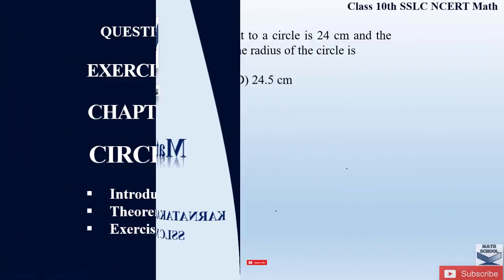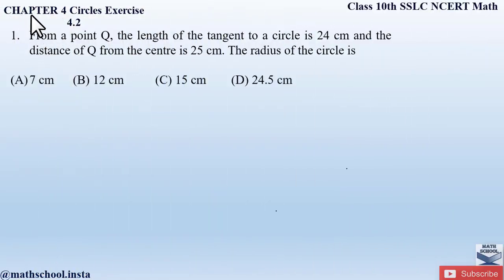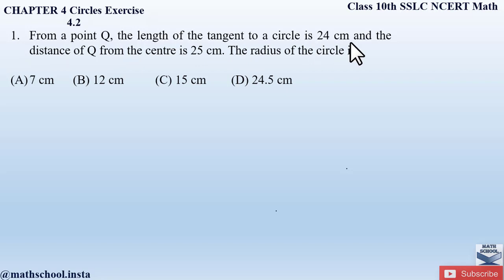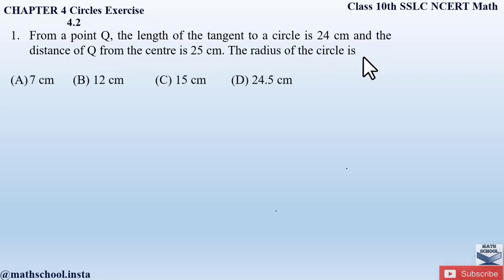Now let us begin. Question number one from exercise 4.2, chapter 4, Circles: From a point Q, the length of the tangent to a circle is 24 centimeters and the distance of Q from the center is 25 centimeters. The radius of the circle is — and we have four options to select the correct one.